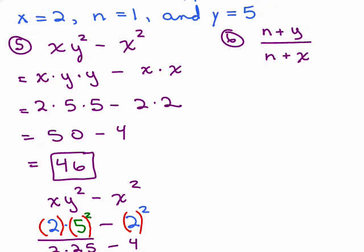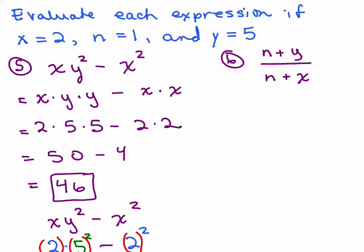Let's do the second problem over here. N plus Y over N plus X. So I'm going to replace N with a 1, and Y with a 5. And in the denominator, I'm going to replace N with 1, and X with a 2. Now you cannot cancel. Remember, you need to simplify the numerator and simplify the denominator first.